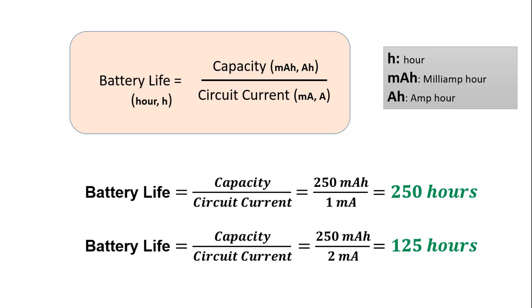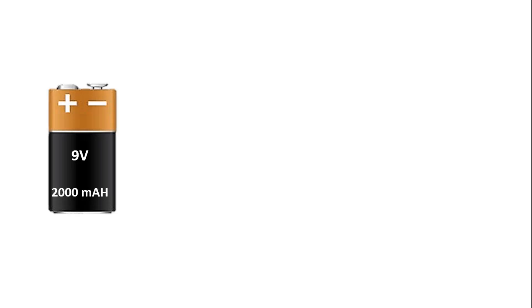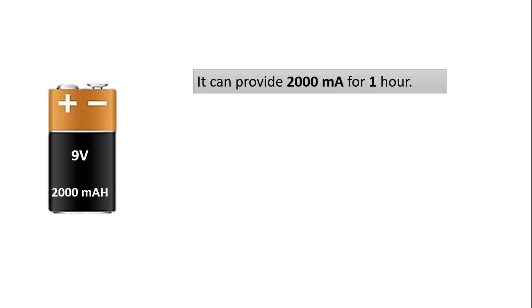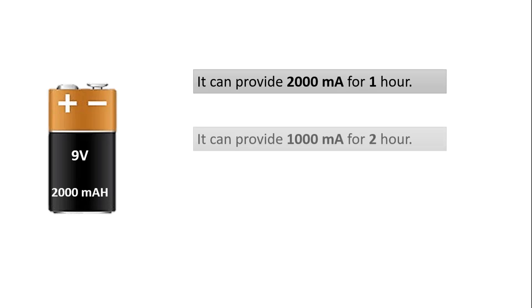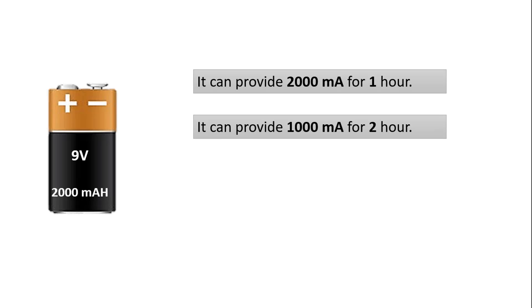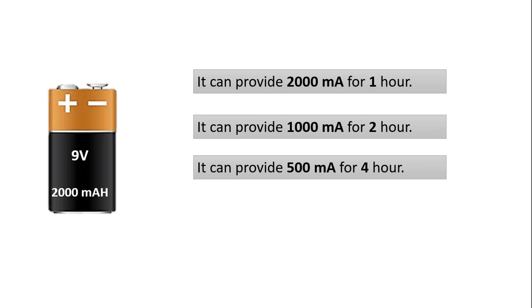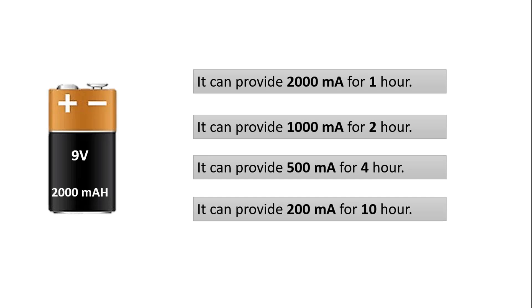The amount of current drawn varies according to the resistance value of the load we connect to the battery. Here we see a 9-volt, 2,000 milliamp hour battery. This battery can provide 2,000 milliamps for 1 hour, 1,000 milliamps for 2 hours, 500 milliamps for 4 hours, or 200 milliamps for 10 hours.